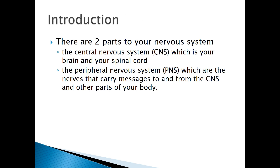Your whole nervous system can be divided into two main parts: the central nervous system, which is your brain and your spinal cord, and the peripheral nervous system, which are the nerves that carry messages to and from the central nervous system and to other parts of the body.